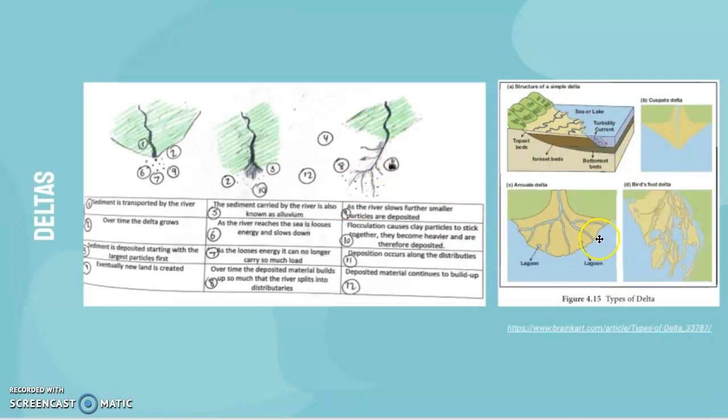Flocculation often occurs at the deltas or the mouth of the river. Deposition also tends to occur along the distributaries and it builds up over time. There are different types of deltas: an arcuate delta shaped like an arc, a cuspate delta which has a triangular looking shape, and a bird's foot delta which looks like a bird's foot.